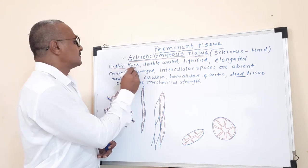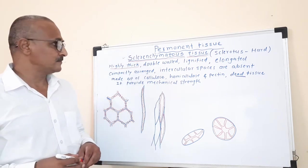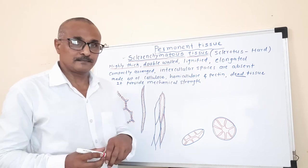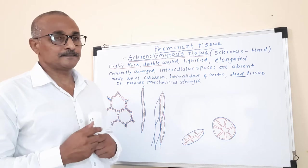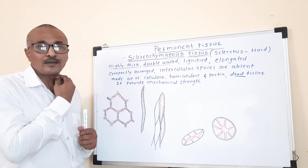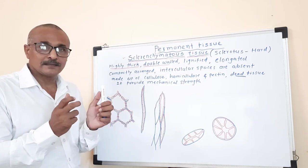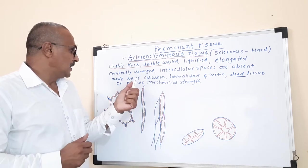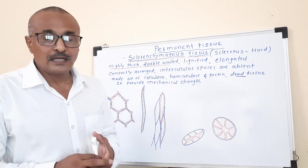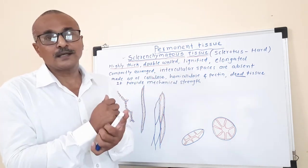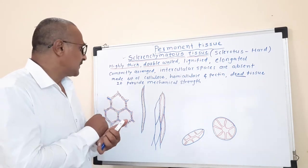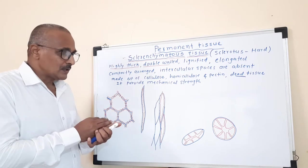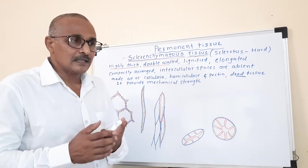The sclerenchymatous tissues are highly thick. The cell walls are very thick — they are double walls, and the cell walls are lignified. The cells are lignified, elongated, and compactly arranged. The sclerenchymatous cells are very compactly arranged, and intercellular spaces are absent due to this compact arrangement. The cell wall is made up of cellulose, hemicellulose, and pectin.